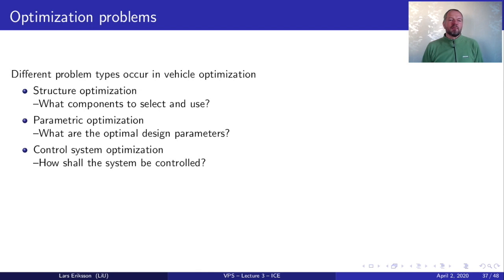The other type of optimization is parametric optimization. That's when we have decided the basic structure but we are wondering for example what engine size should we have or what battery size or what electric machine size should we have. So we are changing the size of components or changing the gear ratios of the gearbox.